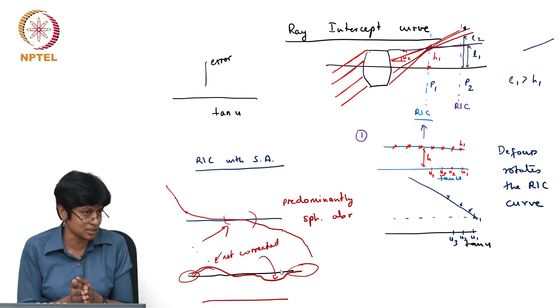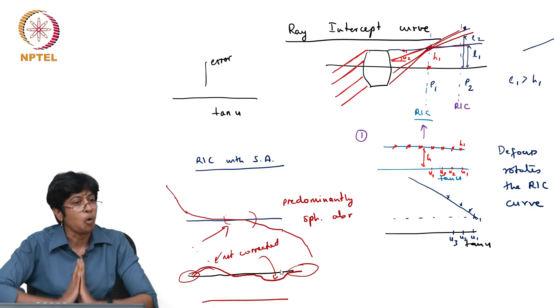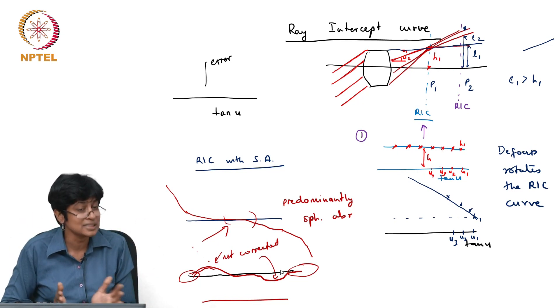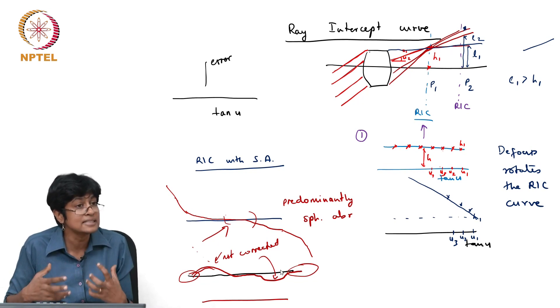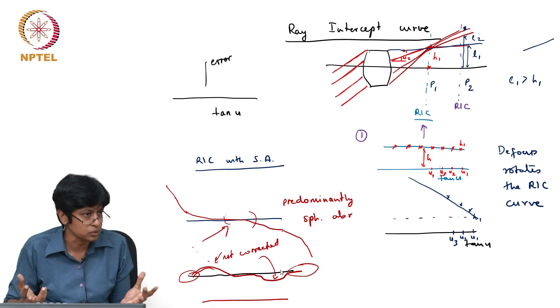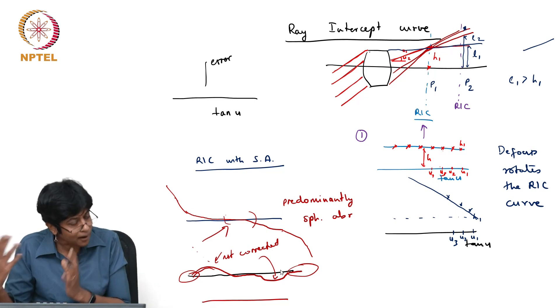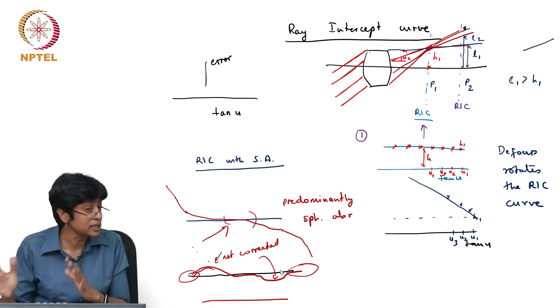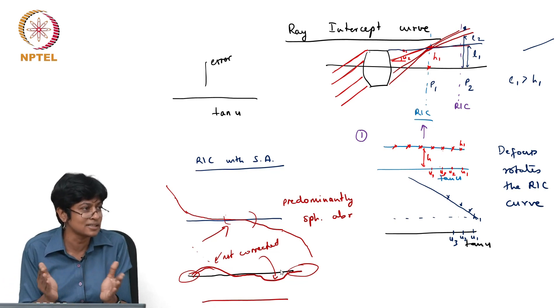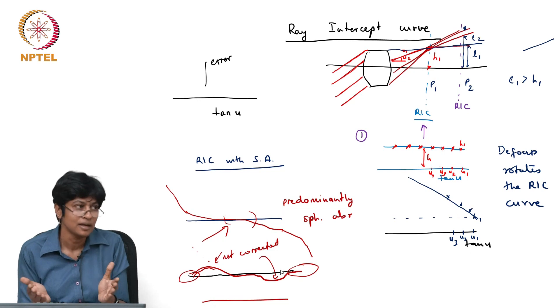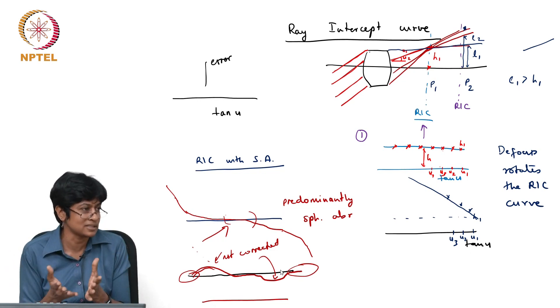And finally, in a real system you will have all the monochromatic aberrations as well as chromatic aberration present simultaneously. The curve is the combined effect of all of those, and of course that makes them harder to analyze. But if you do not understand them when their aberrations are present independently, there is no way you are going to be able to analyze the curve when the aberrations are present together.